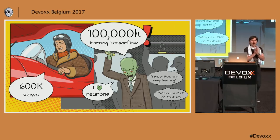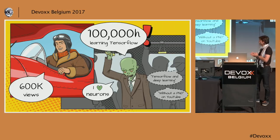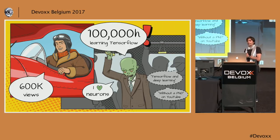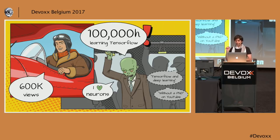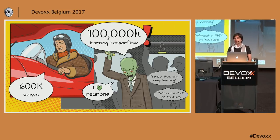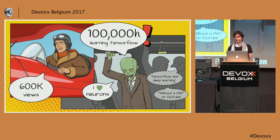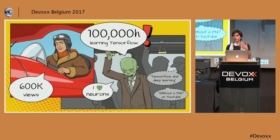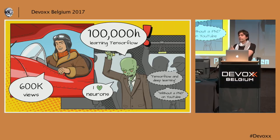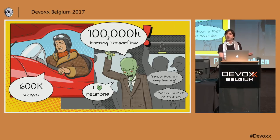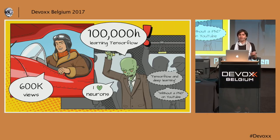This means that a lot of people are learning machine learning and TensorFlow, and those are not people in labs. Those are people like you and me — normal developers who need these technologies because they solve real problems that, even five years ago, we had no idea how to solve.